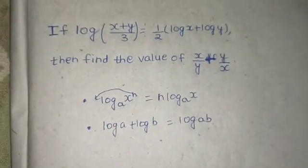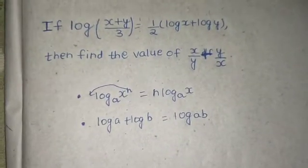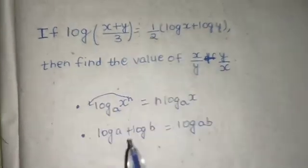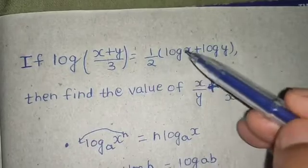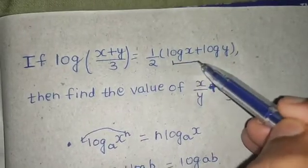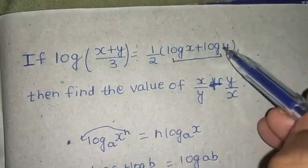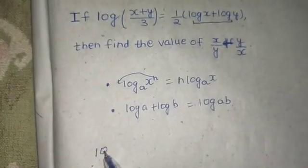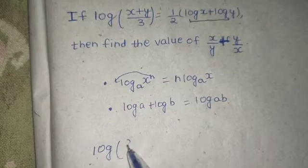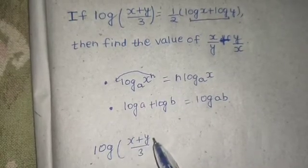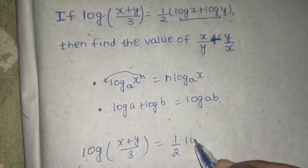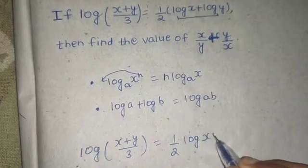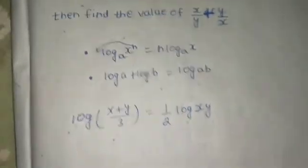Let's see that whether these two properties are enough for us. First of all, I will simplify this. So log a plus log b becomes log ab. So I will get log of (x+y)/3 being equal to half times log of xy. Log a plus log b becomes log ab.